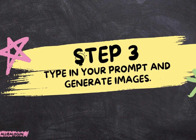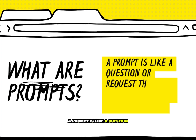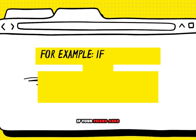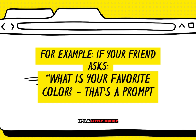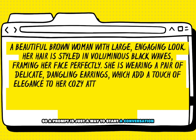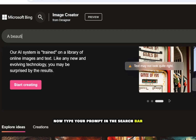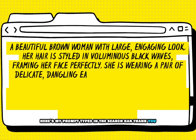Step 3: Type in your prompt and generate images. Let me explain what we mean by prompts. In simple terms, a prompt is like a question or request that asks someone to do or say something. For example, if your friend asks, 'What's your favorite color?' — that's a prompt. It's a little nudge to get you to share some information about yourself. A prompt is just a way to start a conversation or get someone to do something specific. Now type your prompt in the search bar to generate the image. Your prompt should include how you want your image to look.